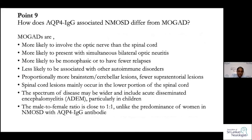Point nine concerns how to differentiate aquaporin-4-associated NMOSD from MOG disease. MOG disease patients are more likely to have bilateral optic neuritis, and more likely to have optic nerve involvement than spinal cord involvement. In their cohort, a large percentage of MOG patients have only optic neuritis without myelitis. Simultaneous bilateral optic neuritis is also more commonly seen in MOG disease. MOG disease is more likely to be monophasic with fewer relapses, and less likely to be associated with autoimmune disorders.